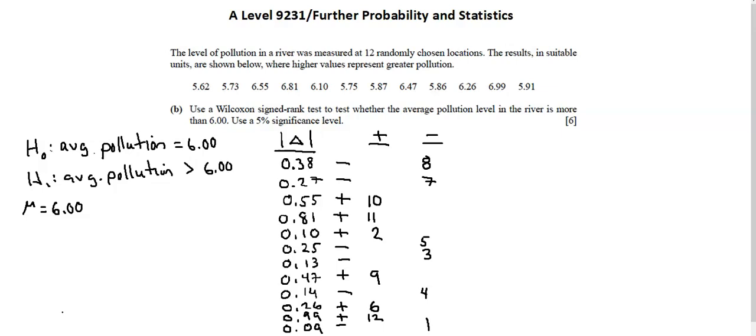Looking over at the negative column, the first two values are 8 and 7. If you look to the left, you'll see that those differences have the negative sign. That's why I've put those two in the negative column. And that's how the classification works for all 12 values.